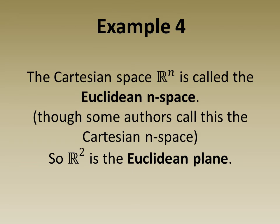Example 4, the Cartesian space R to the n is called the Euclidean n-space. Though some authors call this the Cartesian n-space. So R squared is the Euclidean plane.